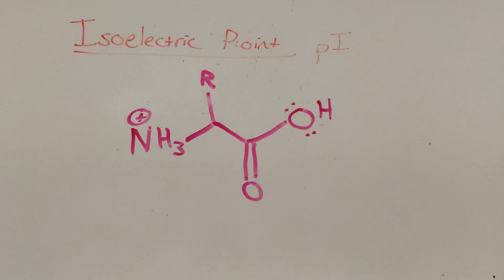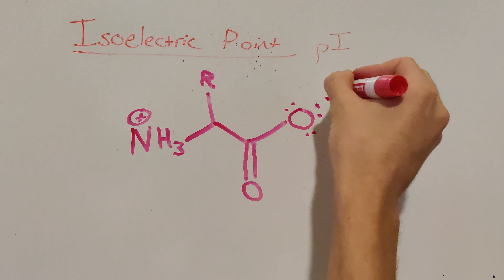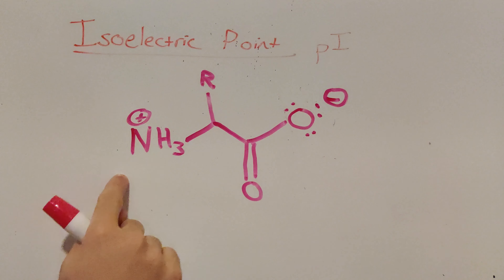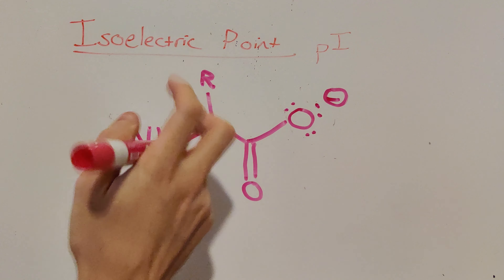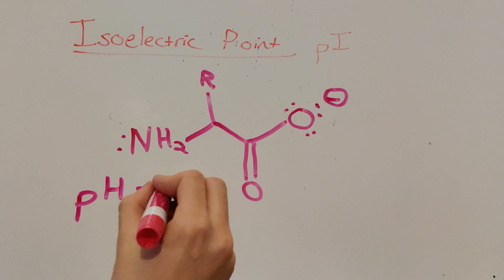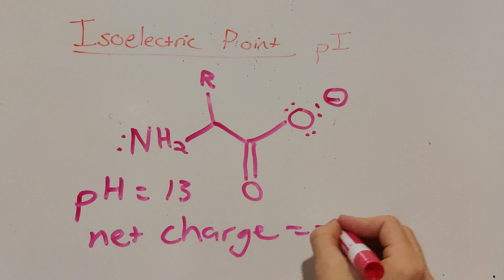Instead of looking at what happens in a very acidic environment with a pH of 1, let's look at an environment that's very basic with a pH of 13. First, we're going to have to deprotonate our carboxylic acid, because carboxylic acids will become deprotonated in even relatively neutral environments — so definitely in a very basic environment. However, we also need to consider our amine, which will also become deprotonated. The environment at pH 13 is just so basic that we can rip off that proton, getting rid of the positive charge on the amine as well. This means our net charge will actually turn into negative one.